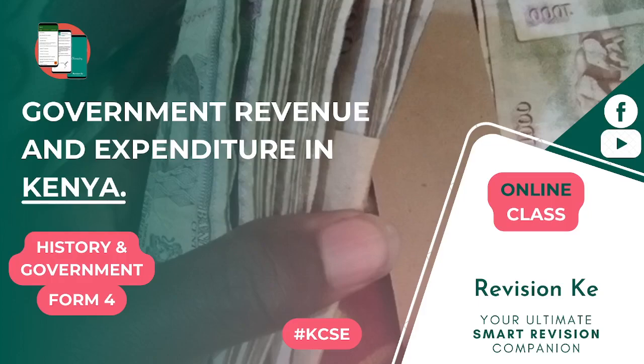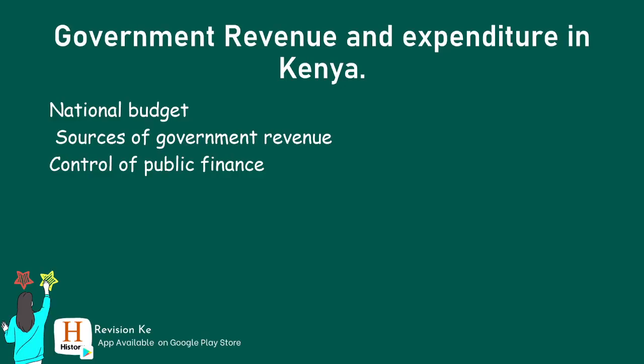Under this topic, we should be able to identify and discuss the sources of government revenue and expenditure, and discuss how the government controls public finance.